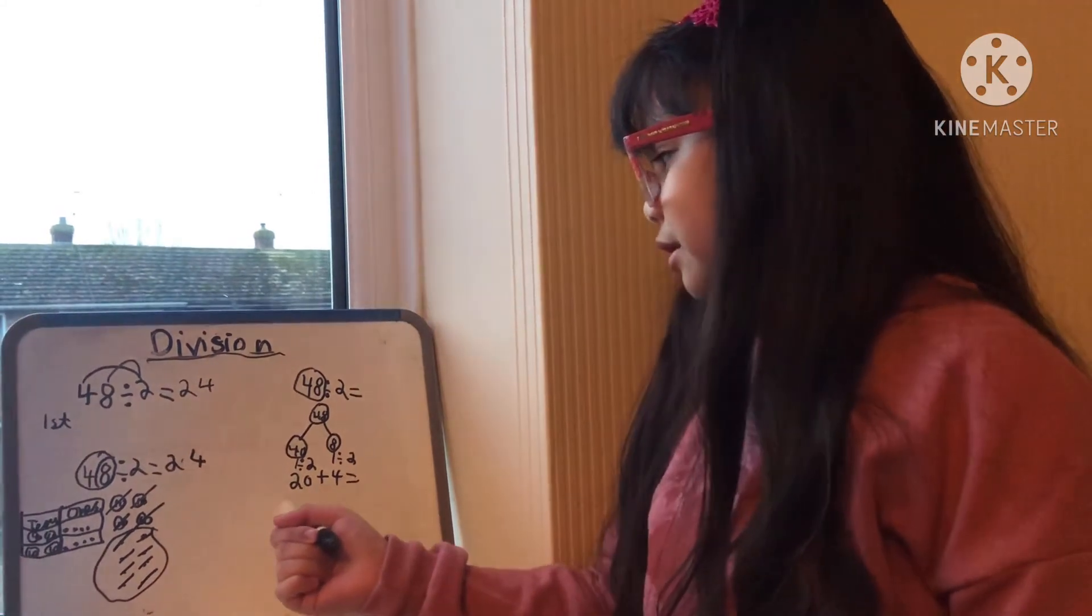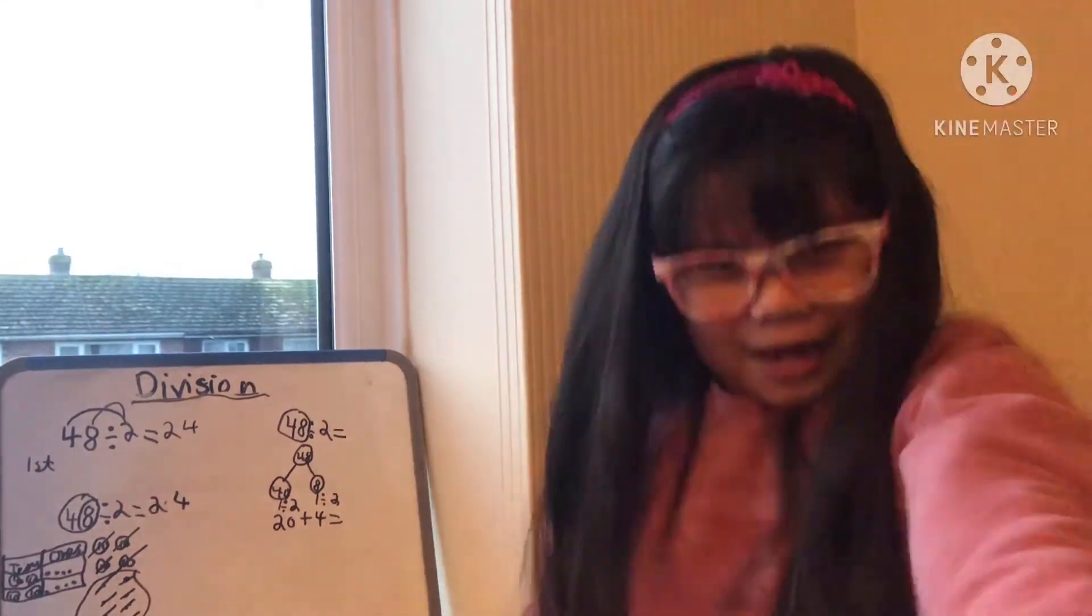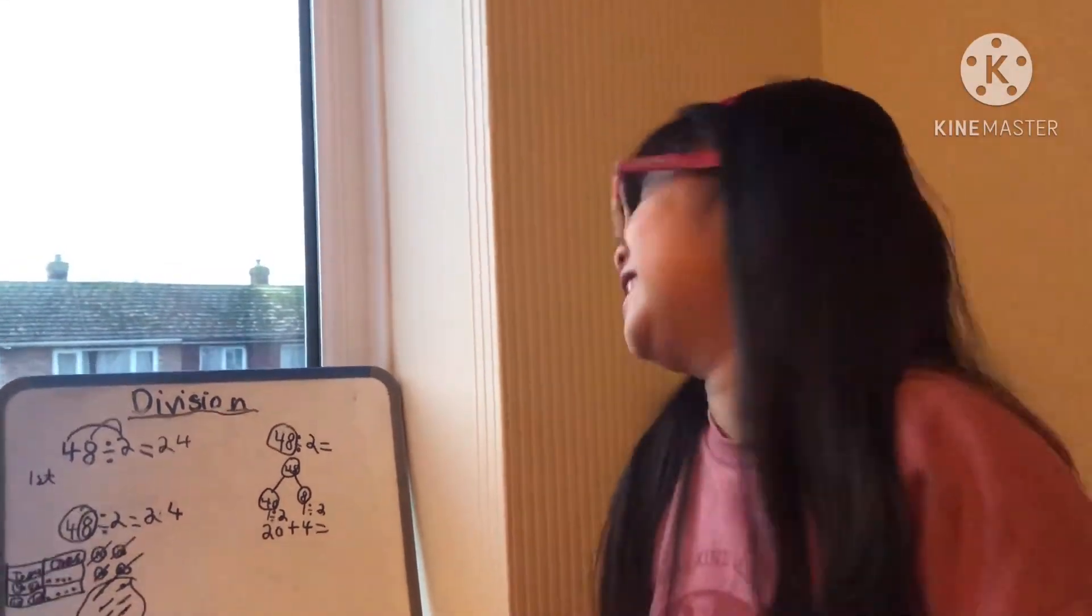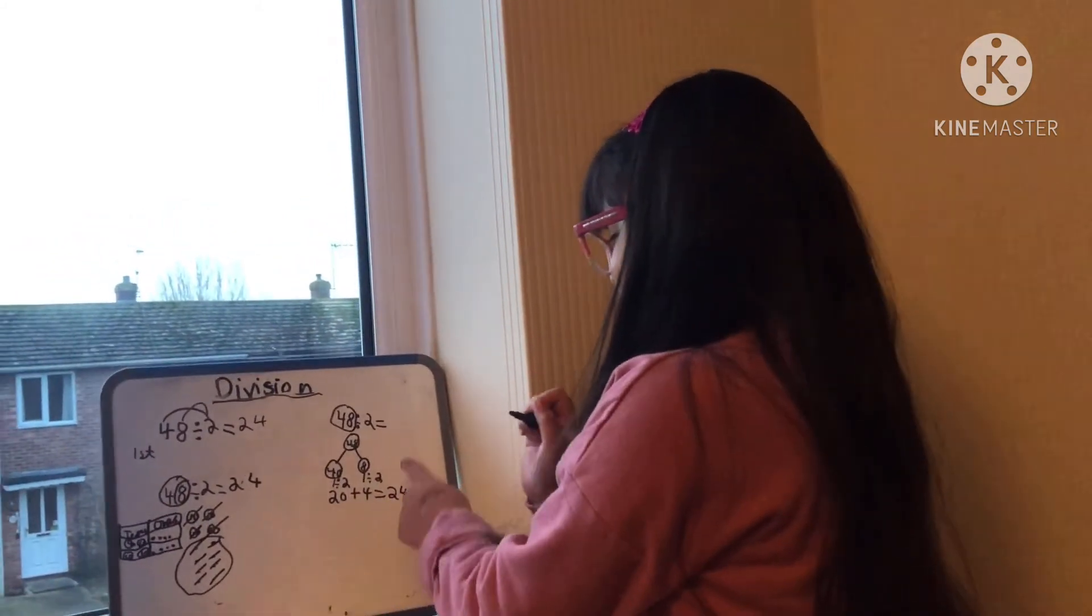So what we do now, we have to figure out this number sentence to get the answer. 20 plus 4 is 24. And then we just copy this to here.